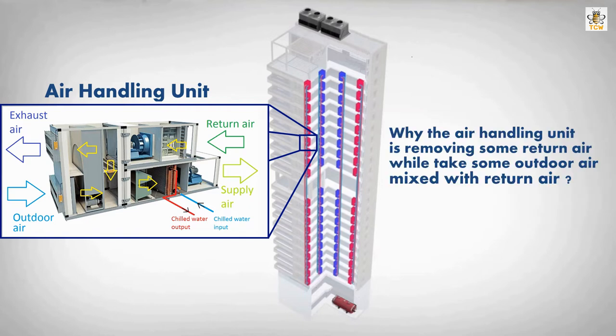Why is the air handling unit removing some return air while also taking some outdoor air to mix with return air? Isn't it simpler to just use all the return air only? You can find the answer at the end of this video.